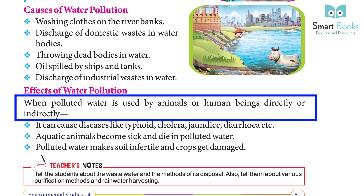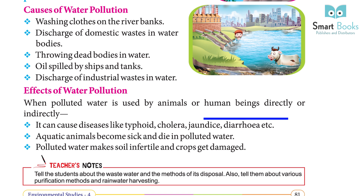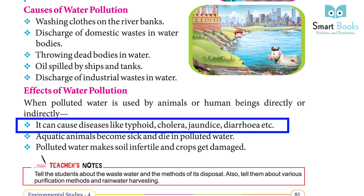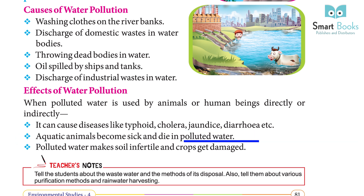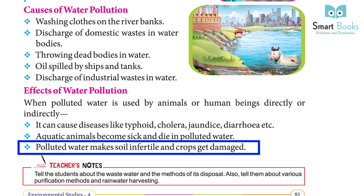Effects of Water Pollution: When polluted water is used by animals or human beings directly or indirectly, it can cause diseases like typhoid, cholera, jaundice, diarrhea, etc. Aquatic animals become sick and die in polluted water. Polluted water makes soil infertile and crops get damaged.